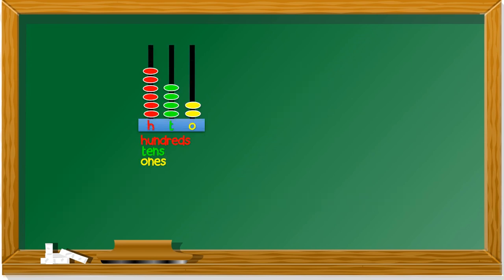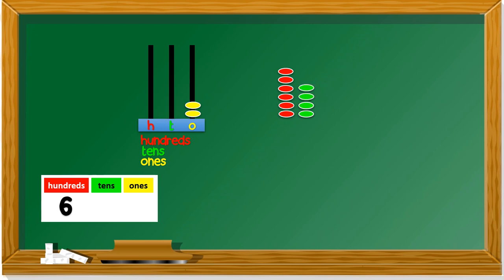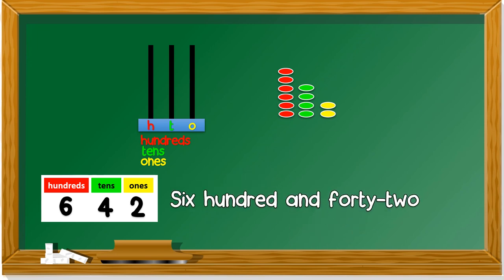One more abacus example. Draw the table, then count the hundreds: 1, 2, 3, 4, 5, 6 — write 6 in the hundreds column. Tens: 1, 2, 3, 4 — there are 4 tens, write 4. Ones: 1, 2 — only 2. So the number is 642.